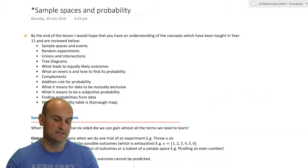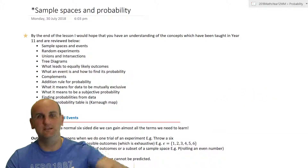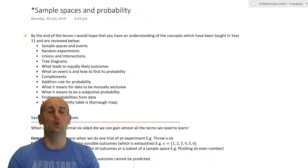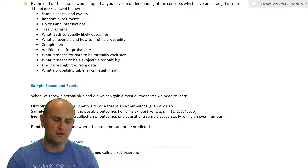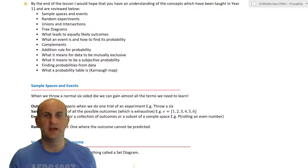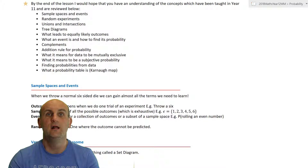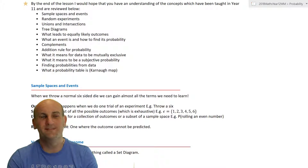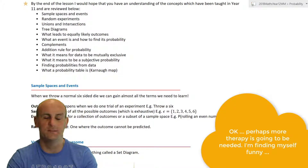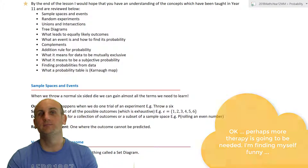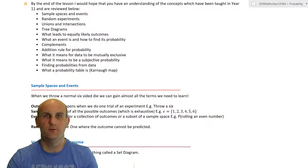The good news is the stuff we're going to do today is really, really easy. On the screen behind me you will see a huge list of things we'll theoretically cover — sample spaces, random experiments, tree diagrams, and all of that. Once we know what the language means, we should be able to ace this whole module on probability.